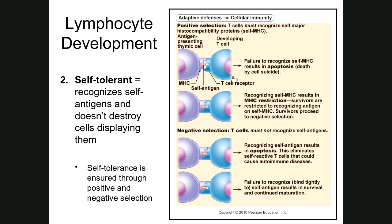What we want in positive selection is a developing T cell that recognizes and binds to the class I MHC perfectly, like a lock and key. This is a cell we want. We're going to send it on to negative selection, because it can recognize class I MHC, which means it knows where to look to see self-antigens.